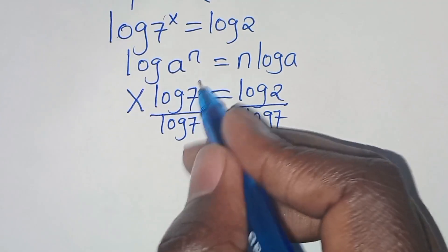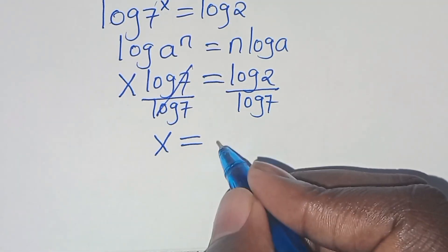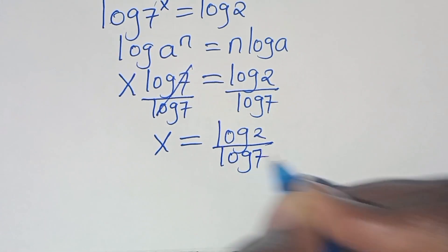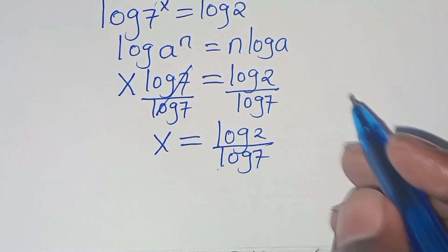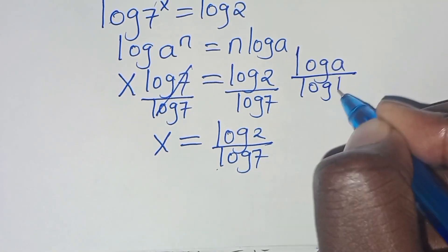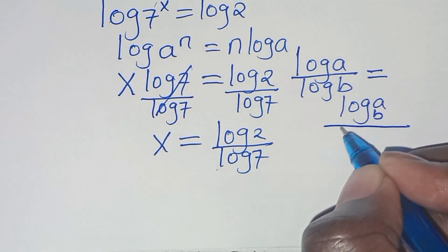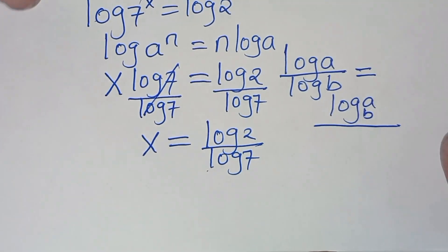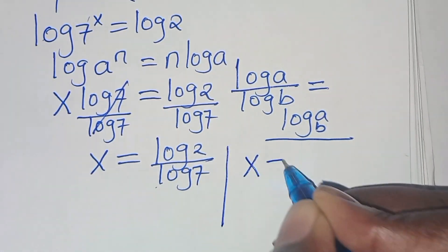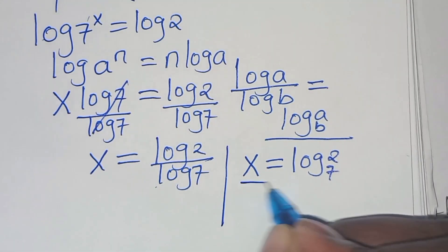Applying the power property of logarithms, log 7 to the power x becomes x times log 7, equals log 2. Dividing both sides by log 7, we get x equals log 2 over log 7, which by the change of base formula equals log base 7 of 2. This is the value of x.